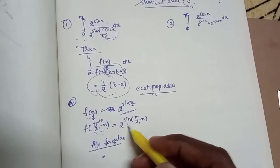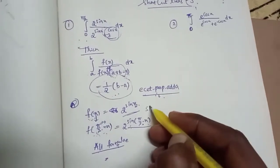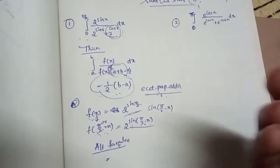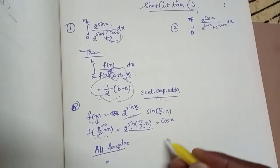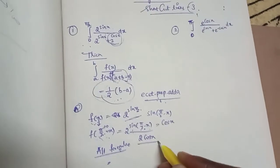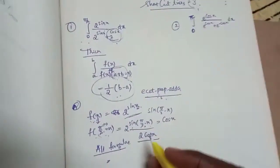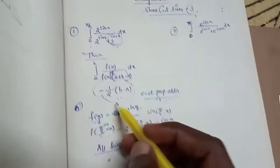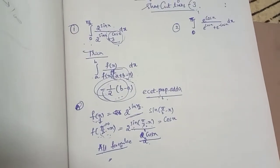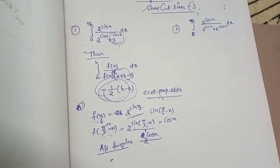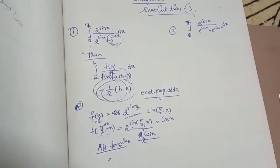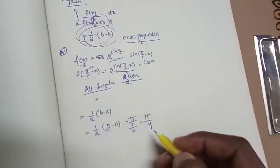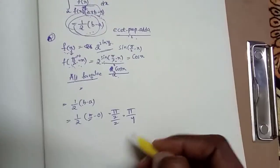So we have 2 into sin of pi by 2 minus x. Now sin of pi by 2 minus x is equal to cos x. So f of a plus b minus x equals 2 power cos x. This matches the formula, giving us 1 by 2, and b value is pi by 2, so pi by 2 divided by 2 equals pi by 4. This is the answer: pi by 4.